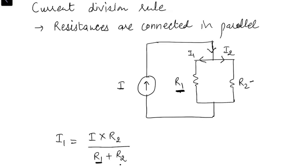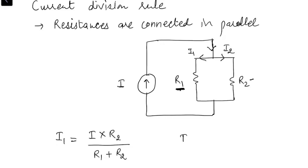Current I1 equals I multiplied by R2, divided by R1 plus R2 — that is, the source current multiplied by the resistance of the opposite branch, which is R2. Similarly, I2 equals the source current multiplied by the opposite branch resistance R1, divided by R2 plus R1.